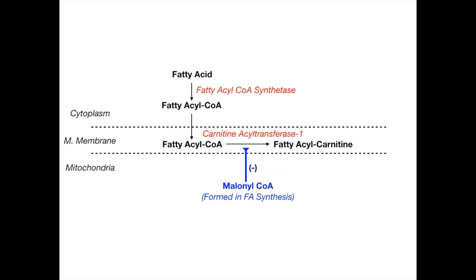To really hammer home this high-yield point: malonyl-CoA is formed in fatty acid synthesis, and therefore malonyl-CoA will inhibit beta-oxidation. It specifically inhibits the step where CAT-1 takes place.